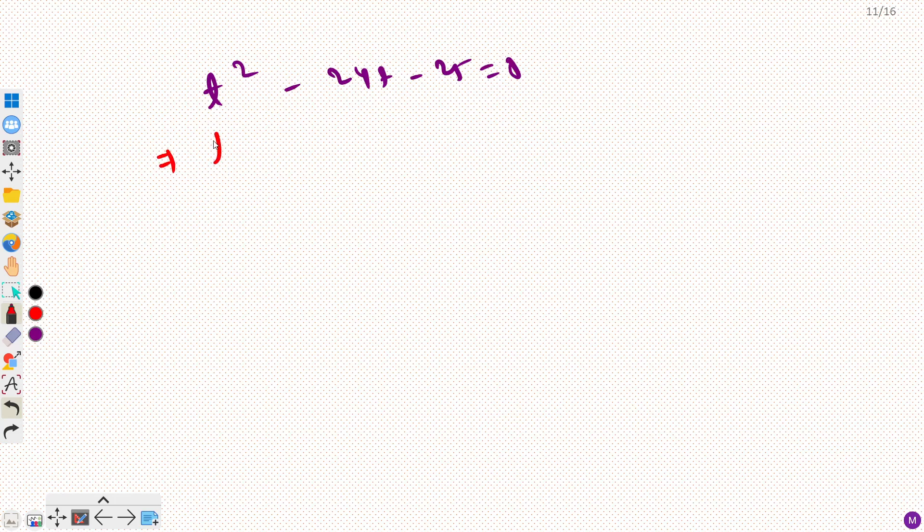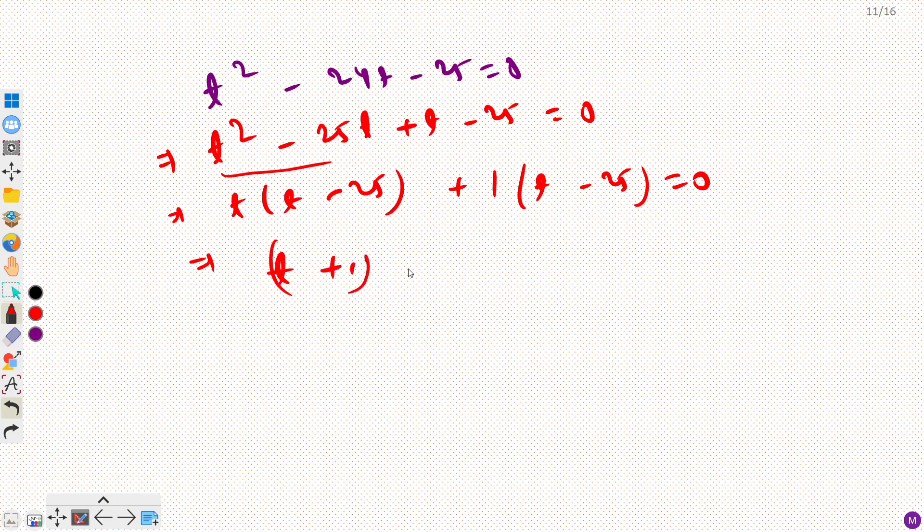Now we can factorize this: minus 25t plus t minus 25 equals 0. We can take t common from here: t times t minus 25 plus 1 times t minus 25 equals 0. From here we can rewrite this as t plus 1 times t minus 25 equals 0.